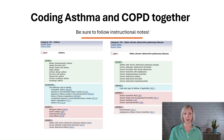To find this code in the alphabetic index, begin with the main term Asthma, followed by the subterm WITH, and then the subterm Chronic Obstructive Pulmonary Disease, which leads to code J4489. Category J44 includes an instructional note that directs the coder to also assign a code for the specific type of asthma, if applicable.